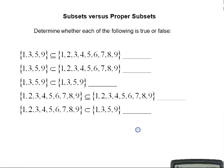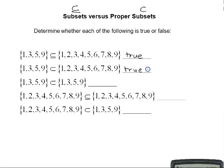Let's determine whether each of the following is true or false. The set {1, 3, 5, 9} is a subset of {1, 2, 3, 4, 5, 6, 7, 8, 9} — true, because every element of the first set is in the second. The set {1, 3, 5, 9} is a proper subset of {1, 2, 3, 4, 5, 6, 7, 8, 9} — also true, since every element of the first is in the second and the sets are not equal.